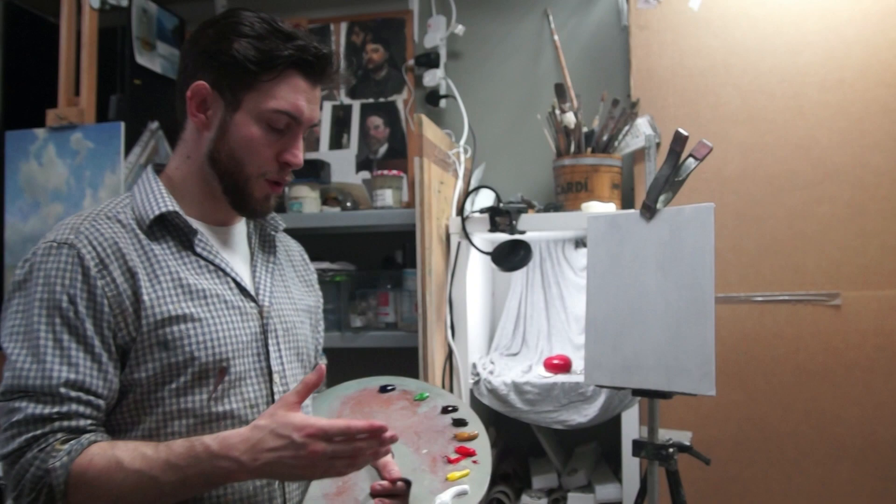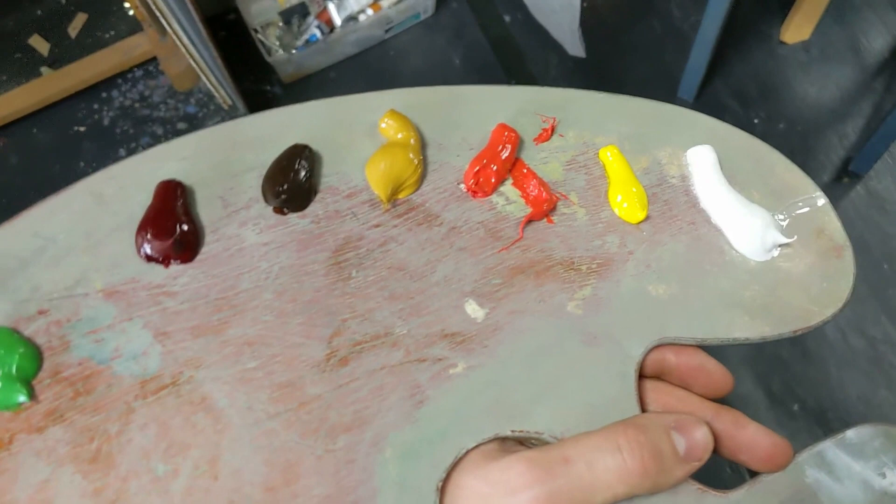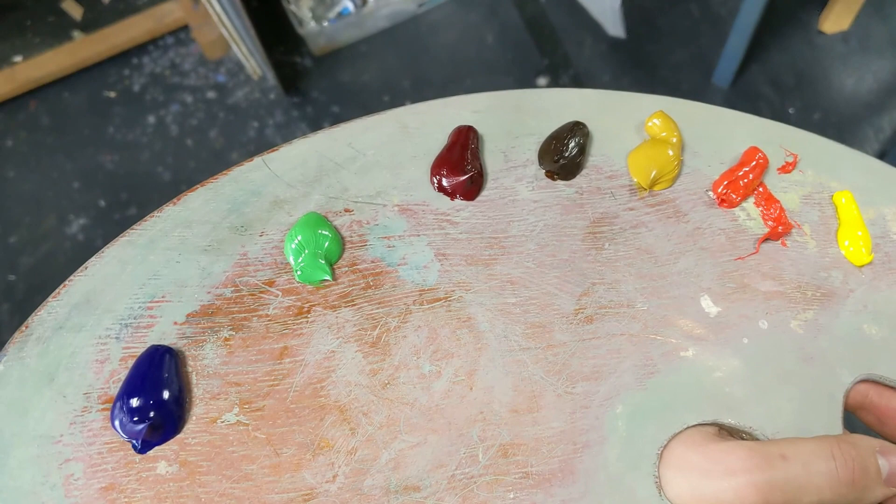I'm just going to give you a quick breakdown of my palette before we get into the painting. On my palette I've got titanium white, cadmium yellow, cadmium red, yellow ochre, raw umber, alizarin crimson, permanent green and ultramarine blue.